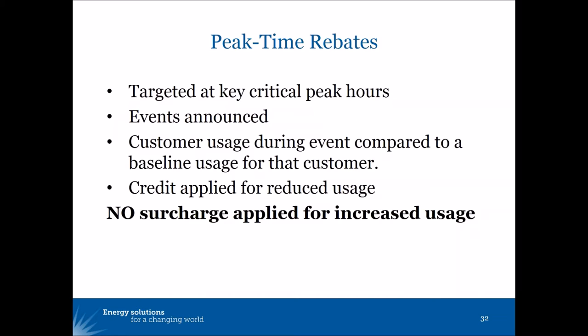A peak time rebate, like a critical peak pricing event, begins with the utility announcing to customers that a critical peak is coming. But the difference here is that the customer's energy charges don't go up during that critical peak event. Instead, the customer receives a rebate or a credit on their bill if they can reduce their energy consumption during the critical peak event from a baseline that the utility has calculated.